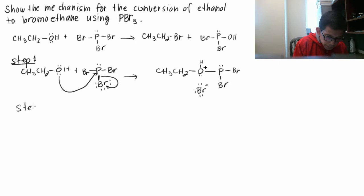And step two. So we start with the product in step one: CH3CH2OHPBrBrBr minus.